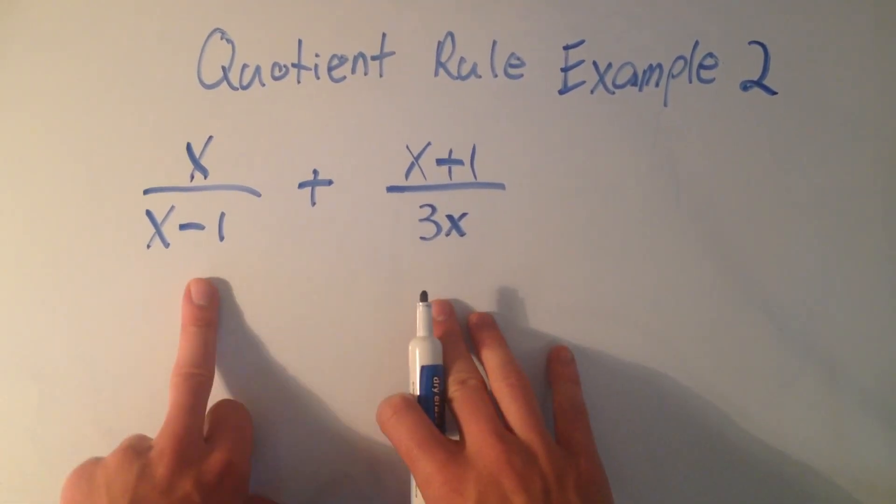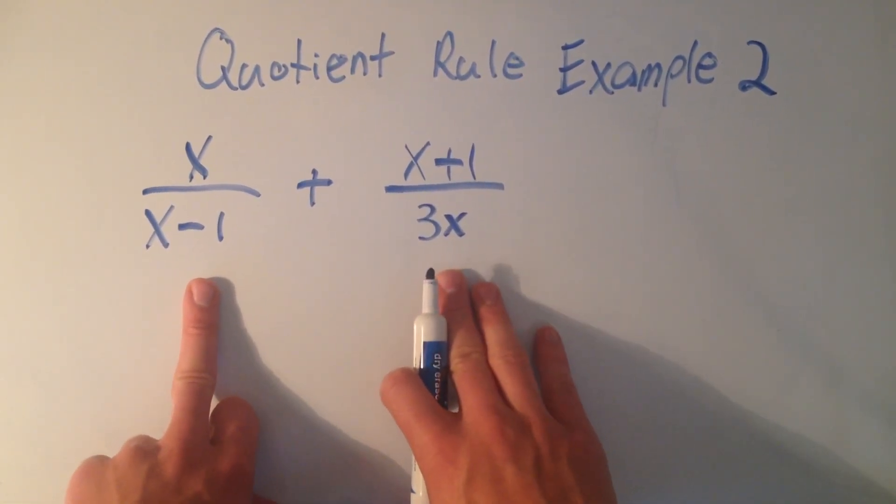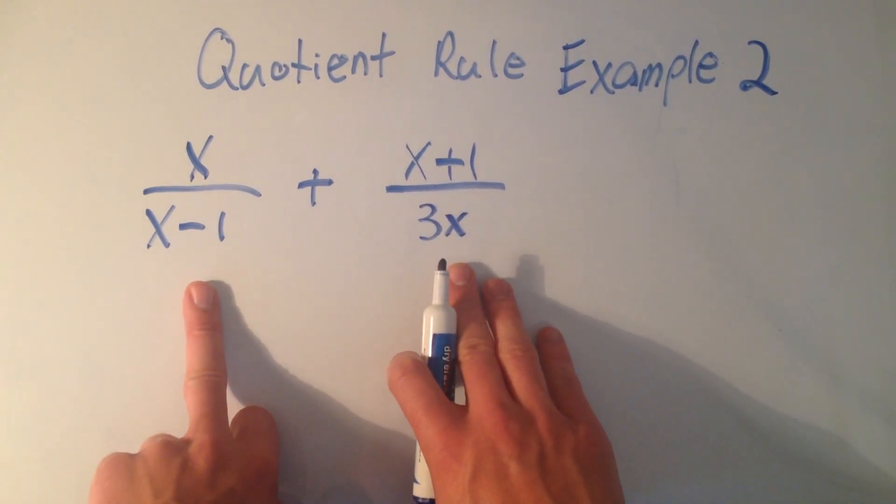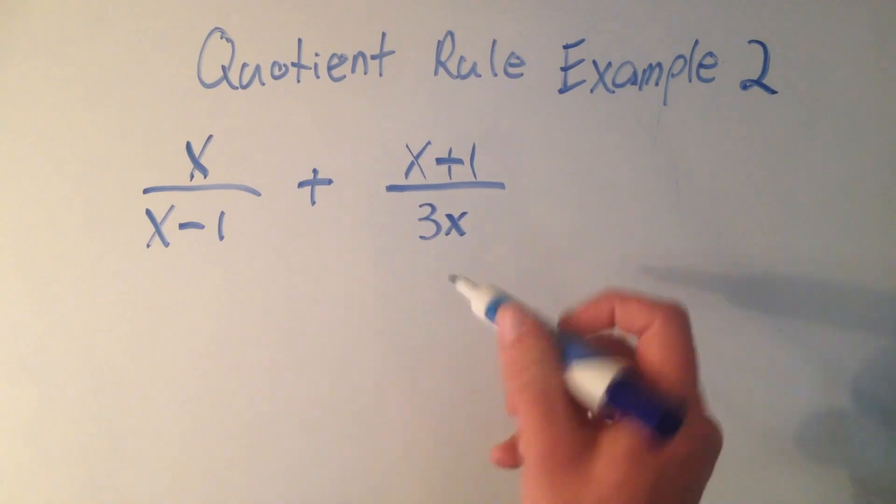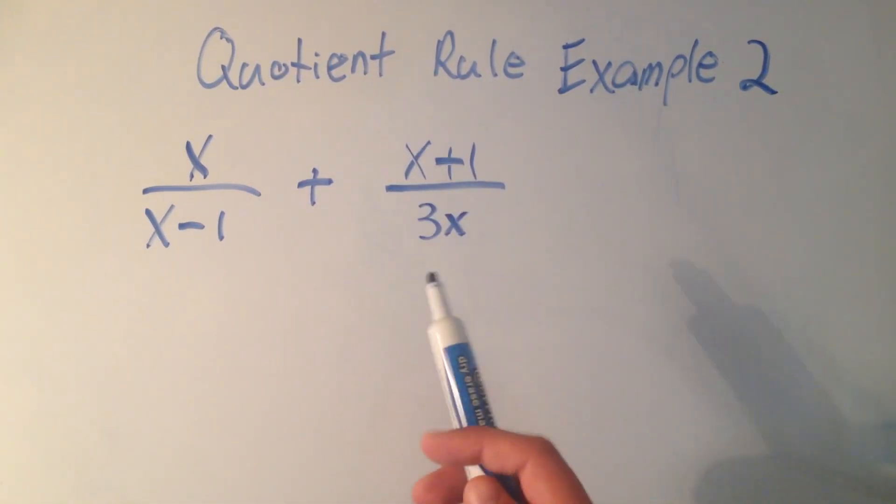This problem I want to do is a little bit harder because it's two different quotients. I'm going to do the quotient rule on both of them. I'm going to take the derivative of this whole thing, but I want to do the quotient rule on each one.